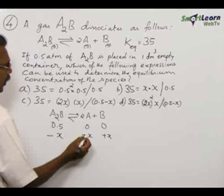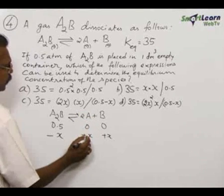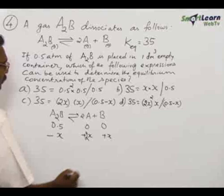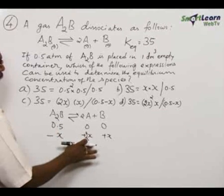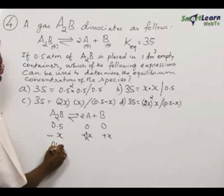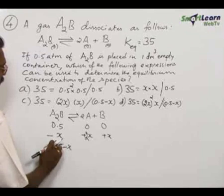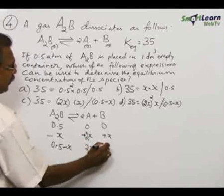As per the structure of the equation, you must write here plus 2x because here is 2A. What is Kc? For that we have to arrive at the equilibrium concentration: 0.5 minus x, and here 2x, and here x.